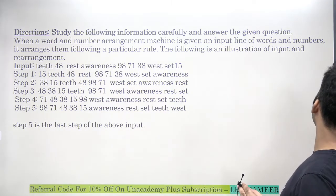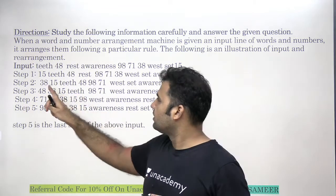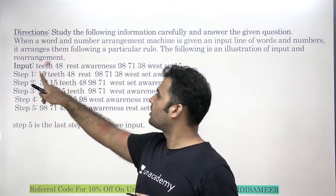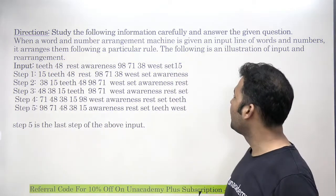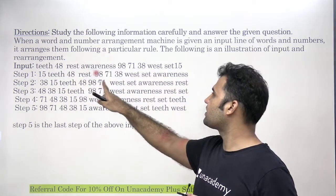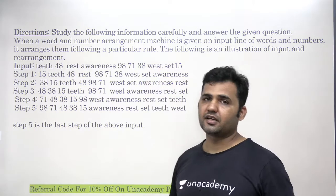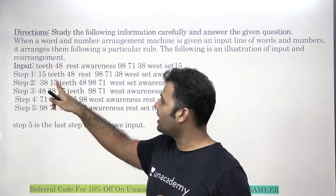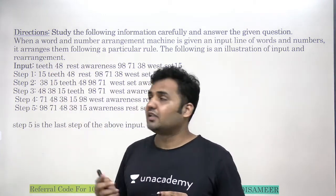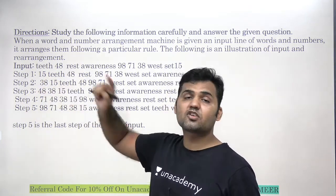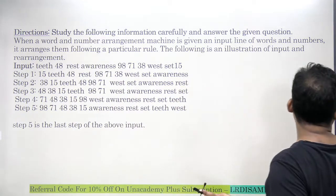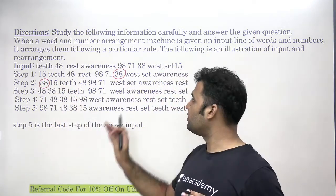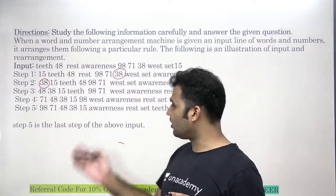Moving from step 1 to step 2, in step 1 the smallest number which is 15 has been taken on the leftmost position. The smallest alphabet, which is the word starting with the smallest alphabet, is 'awareness', and this has been taken on the right hand side. In the second step, the second largest element which is 38 is taken on the left hand side, but it is placed on the left position of 15. This is called filling from the outside — the new element is moved towards the outside part of the arrangement.